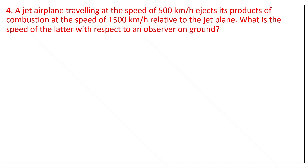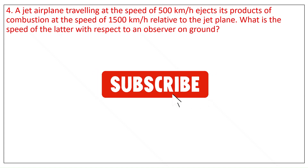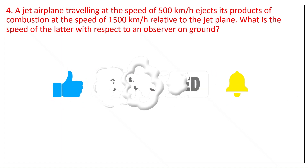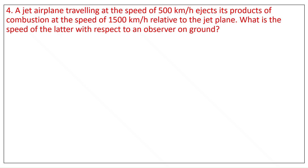Question 4. A jet airplane traveling at a speed of 500 kilometers per hour ejects its products of combustion at a speed of 1500 kilometers per hour relative to the jet plane. What is the speed of the latter with respect to an observer on the ground?